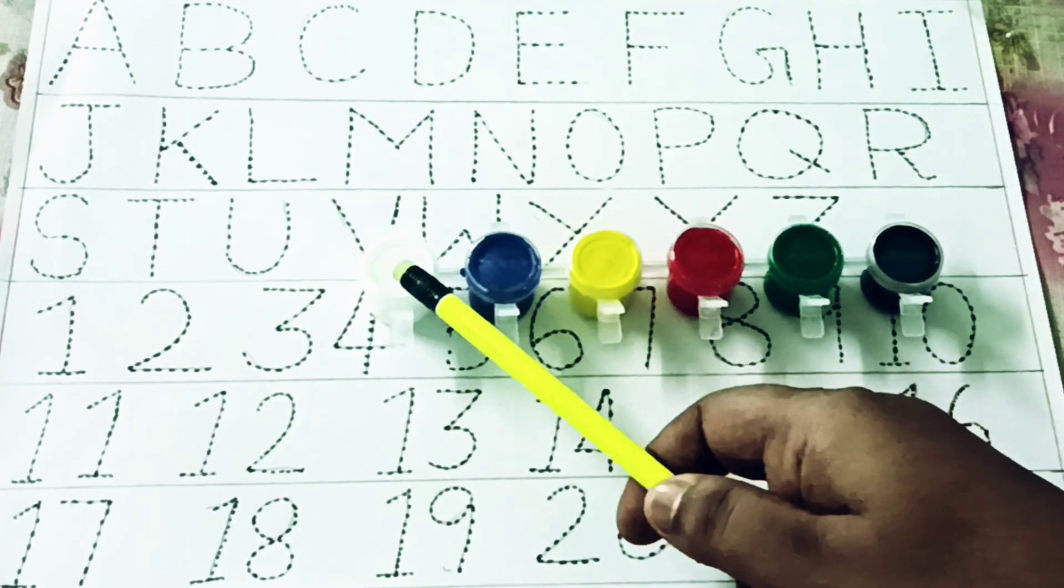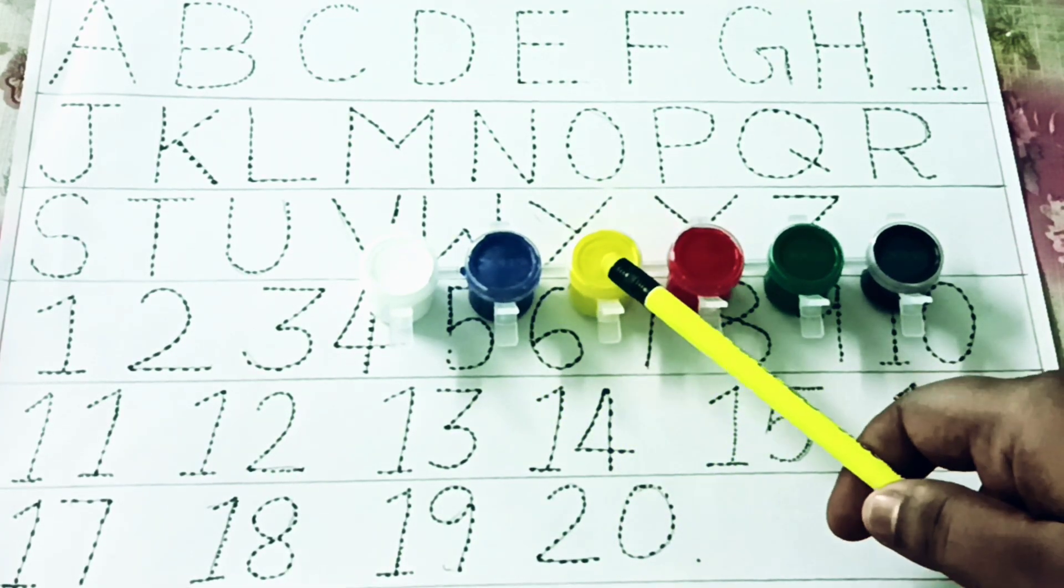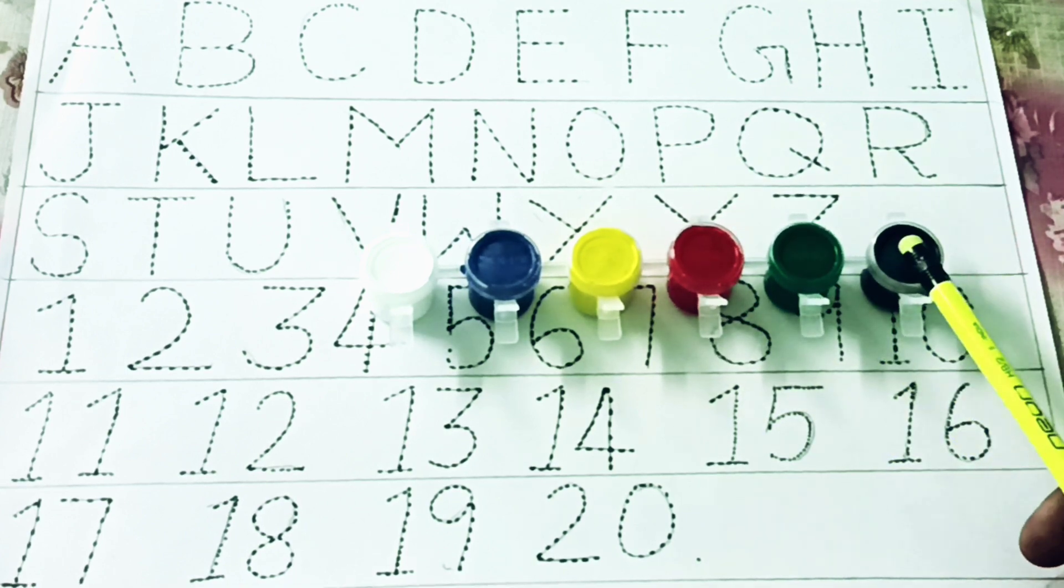ABC Kiddos TV. Blue colour, yellow colour, red colour, green colour, black colour.